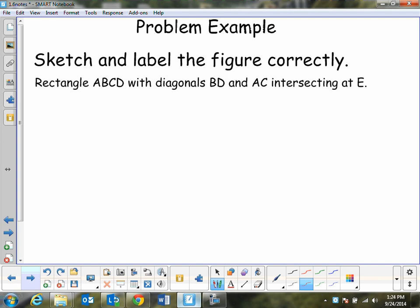Sketch and label the figure correctly. Rectangle ABCD. You know what a rectangle looks like. So you can sketch that. A, B, C, D. Remember, they have to go in order consecutively. And then diagonals BD and AC intersecting at E. Remember, this is just a sketch. So you can help you through it. They are intersecting at E.